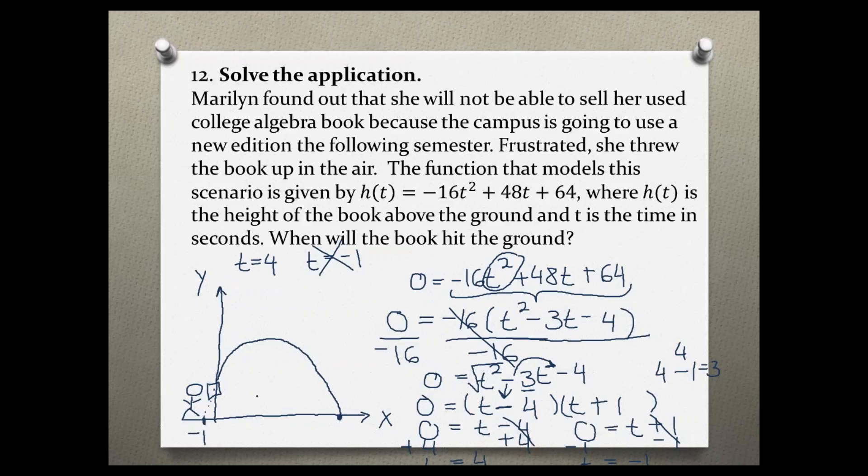But what it basically means is that the parabola is extended right here, and that would be the negative 1. So if that book fell behind her, then it would hit the x-axis at negative 1. But the value that we are really interested in is that t equals 4, which is right here.